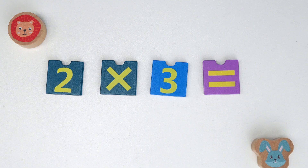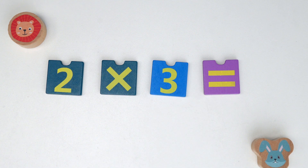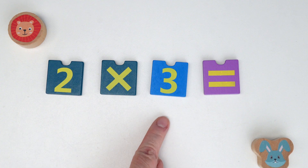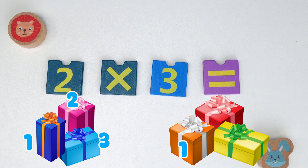Let's try something new. This time we will use our multiplication sign. You would use this sign when you are adding groups of the same number together. Our first example is two multiplied by three equals. So this means we have two groups of three to be added together. Here we have our two groups. Each one has three presents: one, two, three — one, two, three.